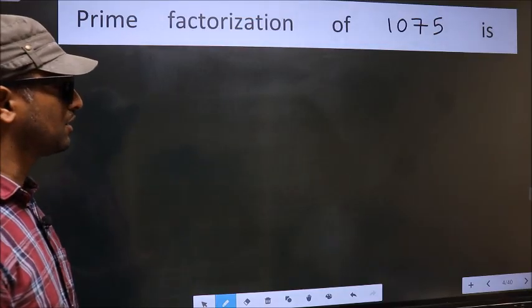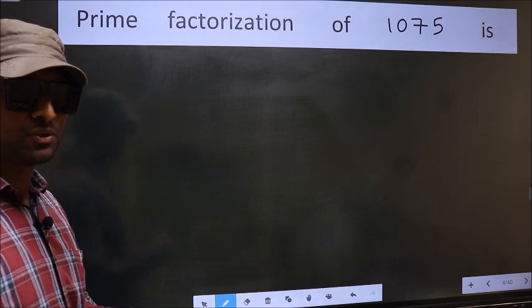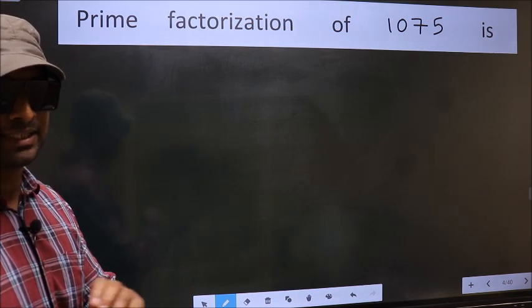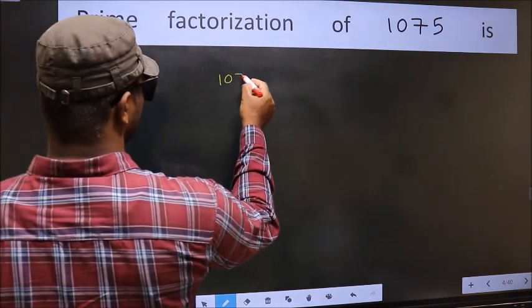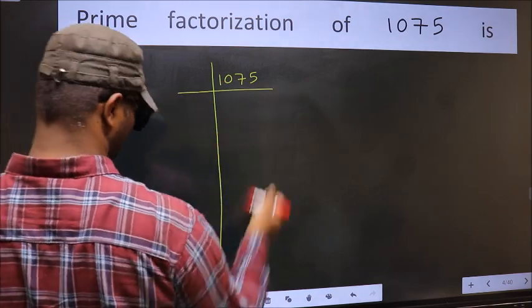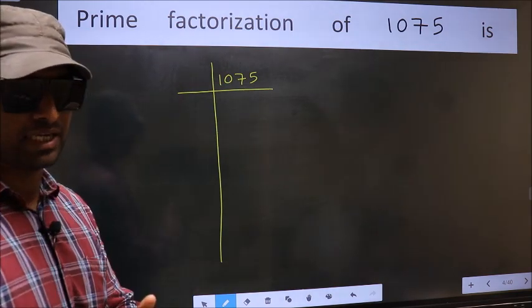Prime factorization of 1075 is... To do the prime factorization, first we should frame it in this way. 1075. This is your step 1.